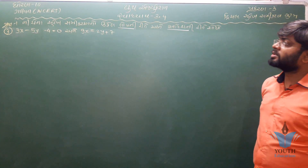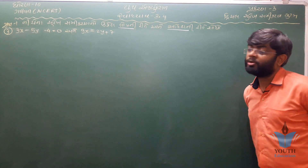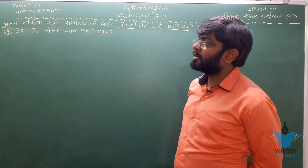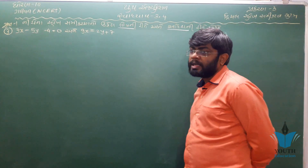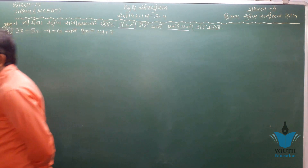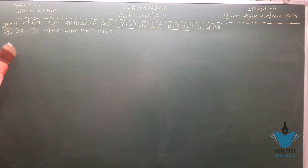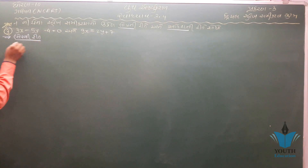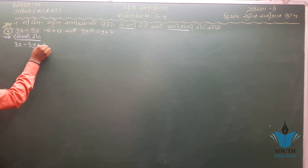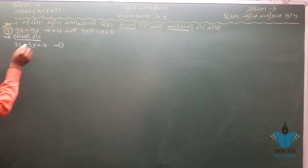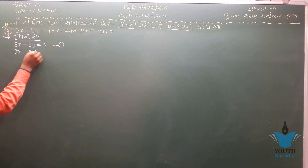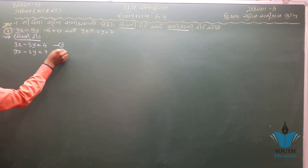નીચે ના સુરેખ સમીકરણ — લોપની રીત અને આદેશની રીતે શોધો છો. સમીકરણ: 3x - 5y - 4 = 0 અને 9x = 2y. તો સૌ પ્રથમ આપણે 3x - 5y = 4 લખી. 9x - 2y ને ડાબી બાજુ લઈ જતા 9x - 2y = 7 પરિણામ.